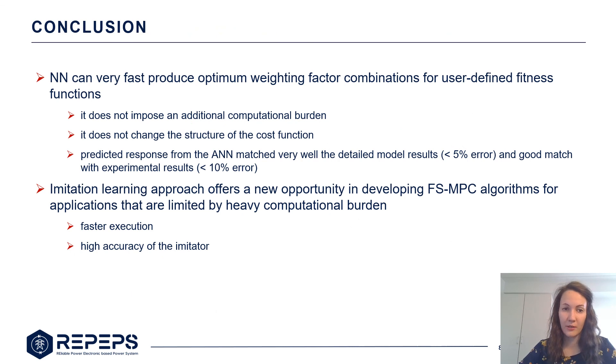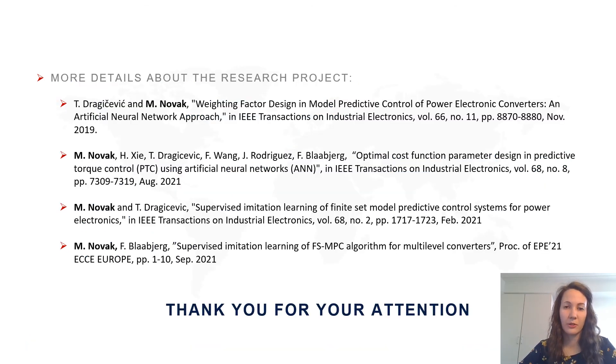In conclusion we can say that the neural networks help us solve two problems which are limiting the industrial applications of MPC. One is the design of the weighting factors and the other is the high computational burden. More information about the research project can be found in the following publications. I thank you for your attention.